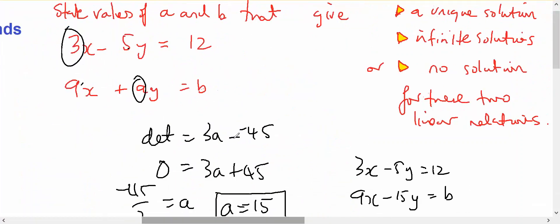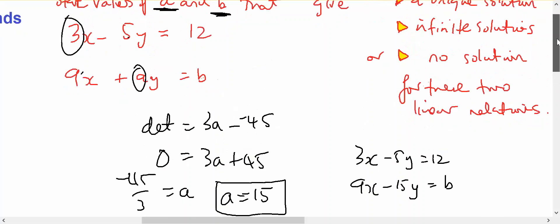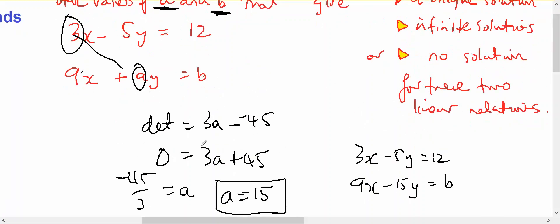Here's an example. So 3 times A, 3A, minus minus 5 times 9 is 45, therefore A equals negative 15.